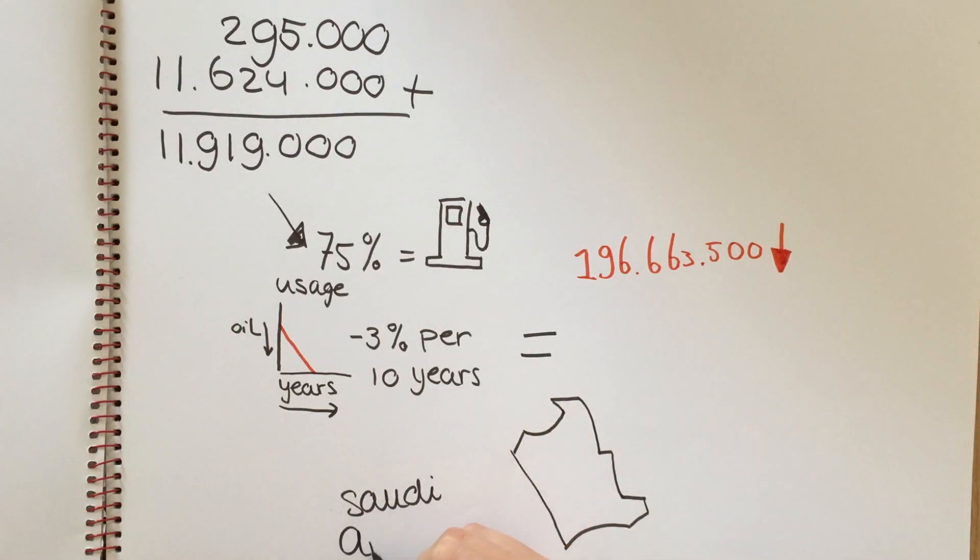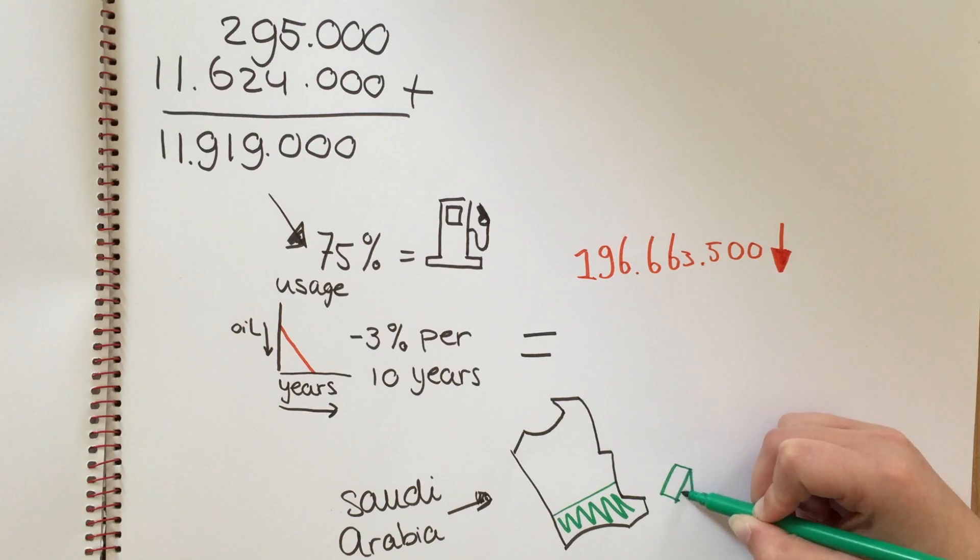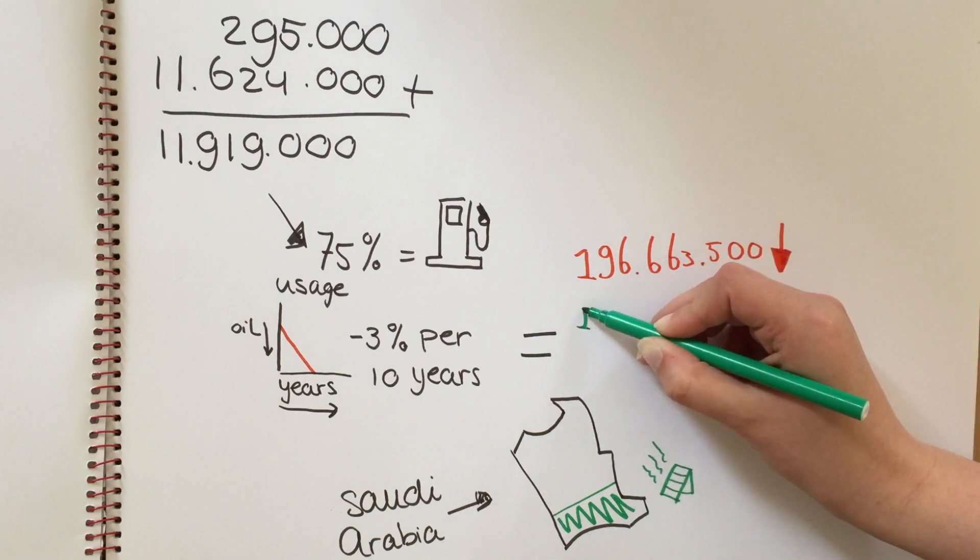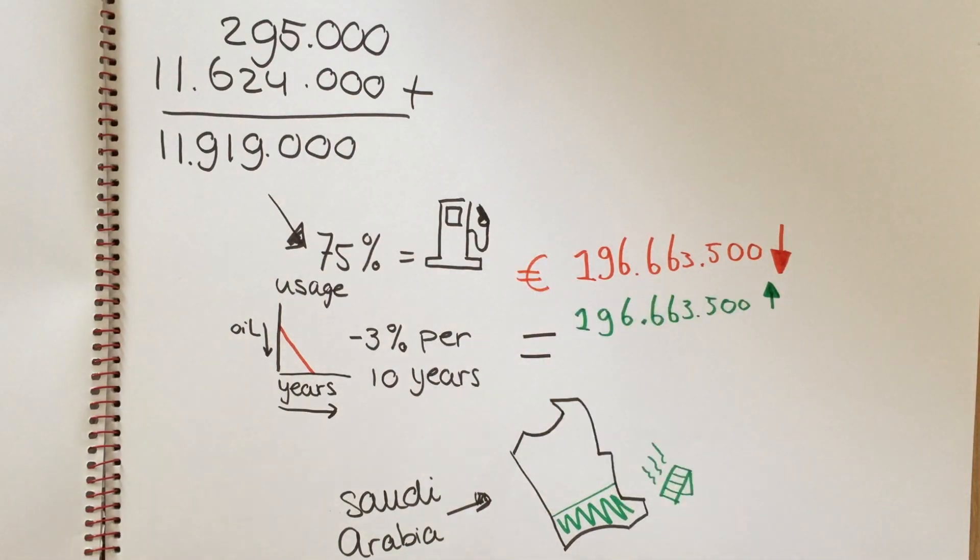If Saudi Arabia would cut down the oil, the money loss could be compensated by placing solar panels to 27% of the land. 95% of Saudi Arabia is desert, so this shouldn't be a problem.